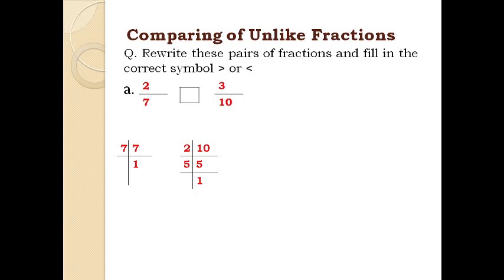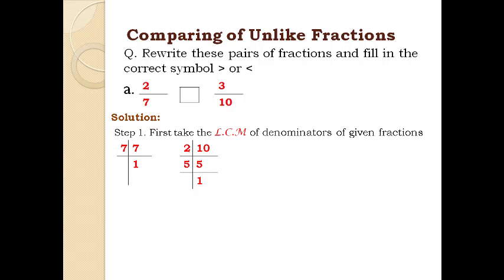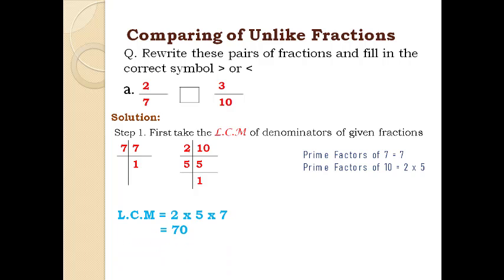Comparing unlike fractions: rewrite these pairs of fractions and fill in the correct symbol, greater than or less than. For example, 2 over 7 compared with 3 over 10. These are unlike fractions. Step 1: take the LCM of the denominators. By prime factorization of 7 and 10, the LCM is 70. So the common denominator is 70.